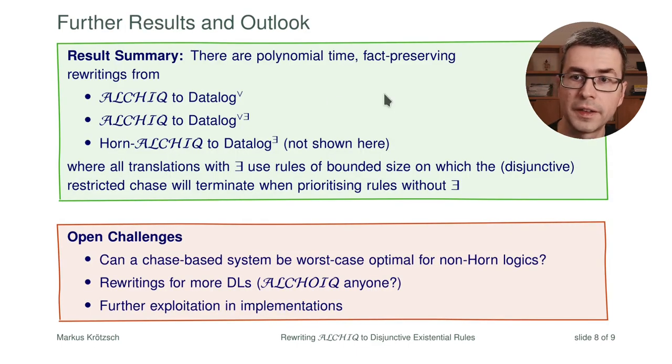This is the gist of this second approach. Summing up, what we have seen is that there are two rewritings here from ALCHIC to datalog with disjunctions and existential rules with disjunctions. There is also a version for Horn-ALCHIC which I didn't show here. The existential rules give us polynomial sized bounded rule rewritings and they are still terminating in exponential time or in non-deterministic exponential time if you have disjunctions.